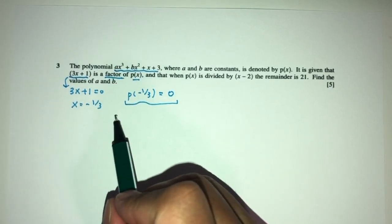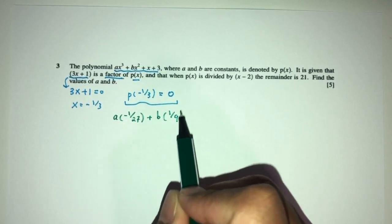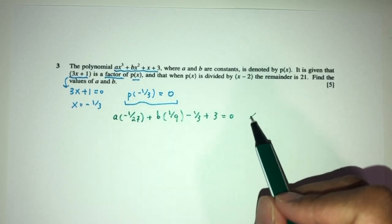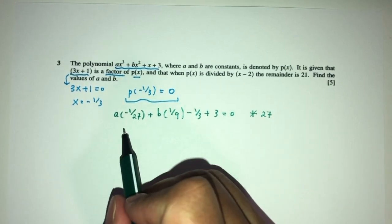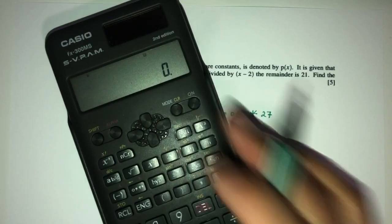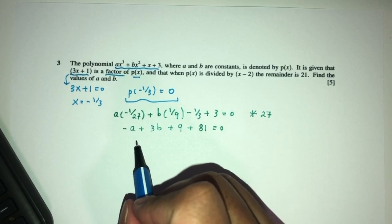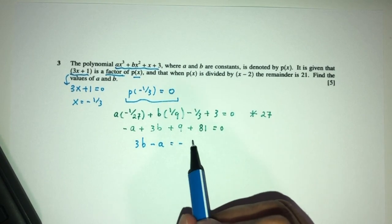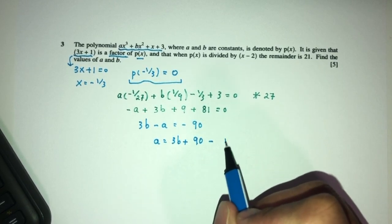That will be a(-1/27) + b(1/9) - 1/3 + 3 = 0. Let's simplify, times everywhere by 27. You will have -a + 3b + 9 + 81. Now simplify: 3b - a and 9 + 81 should be 90. So plus 90 here should be -90. Now a can be the subject: a = 3b + 90. My equation number 1.